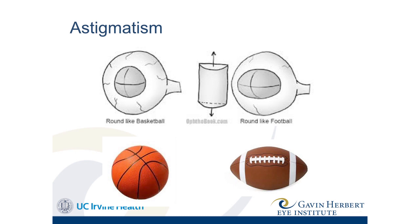Astigmatism has to do with the shape of the cornea. If you imagine a basketball, any direction you move from the top is down the same slope. However, on a football, one path takes you down a very steep slope and another path takes you down a less steep slope. That difference between the two is astigmatism.